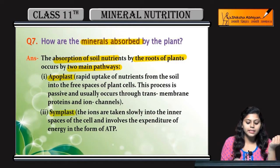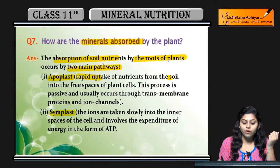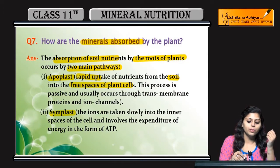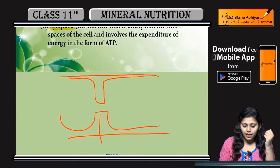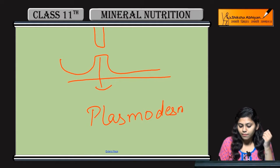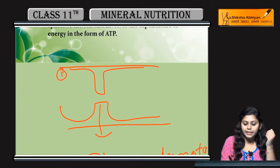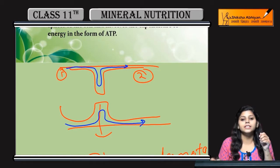Apoplast pathway se and Symplast pathway se. Jo apoplast pathway hai, us mein rapid uptake of nutrient hoota hai from the soil into the free spaces of the plant cells. Jo plant cell ke free spaces hain, udhar rapid uptake hoota hai. Maan loo, ye plant cell hai. Yeh ek cell hai and yeh second cell hai. Yeh jho free spaces hai, yehaan pe jo movement hooti hai kisi bhi nutrient ki — this is apoplast.